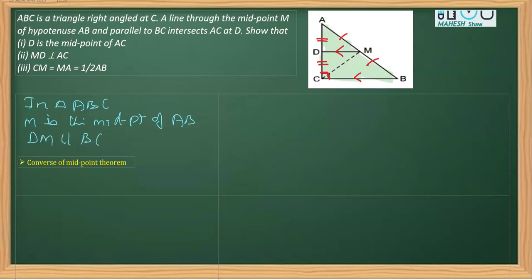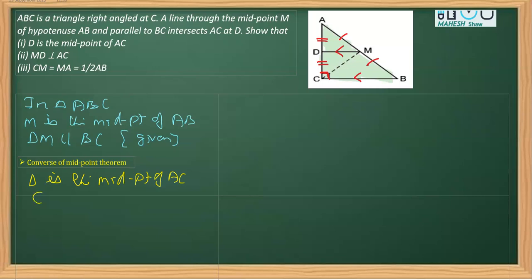Further, we know that DM is parallel to BC. These two things are given to us, so the reason is 'given'. By applying the converse of the midpoint theorem, we can write that D is the midpoint of AC, or equivalently, AD is equal to DC. That completes the first part of the proof.